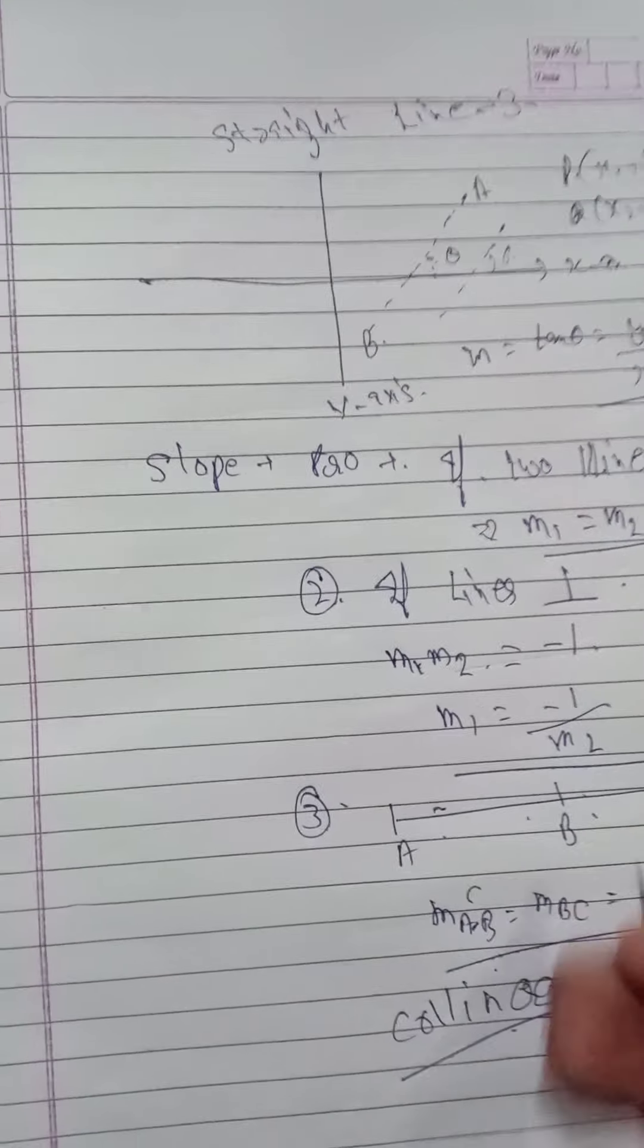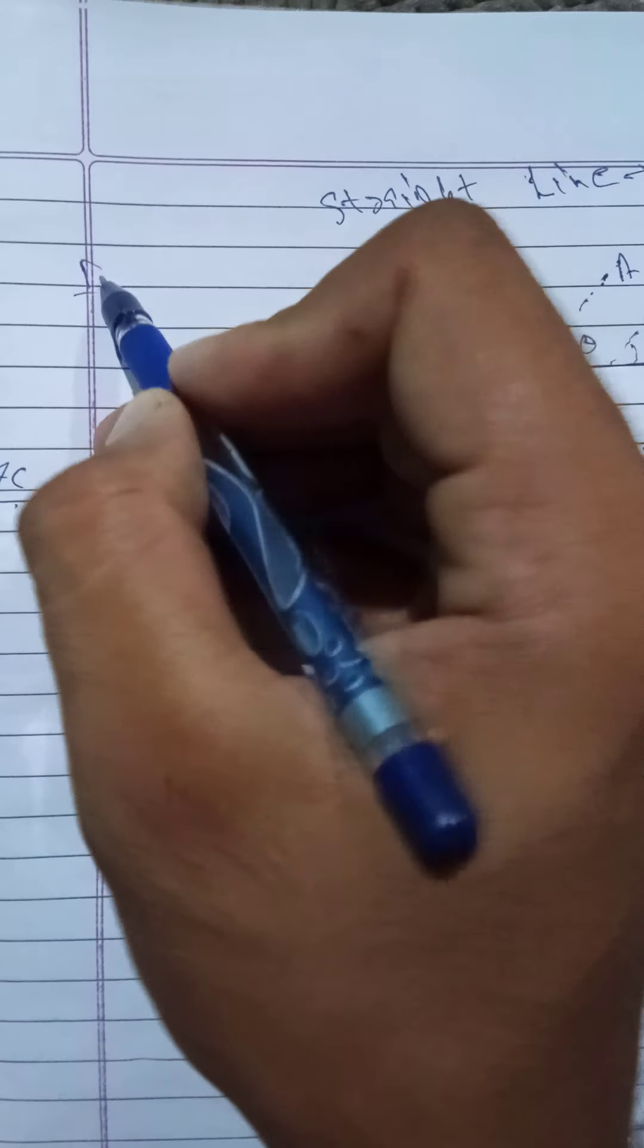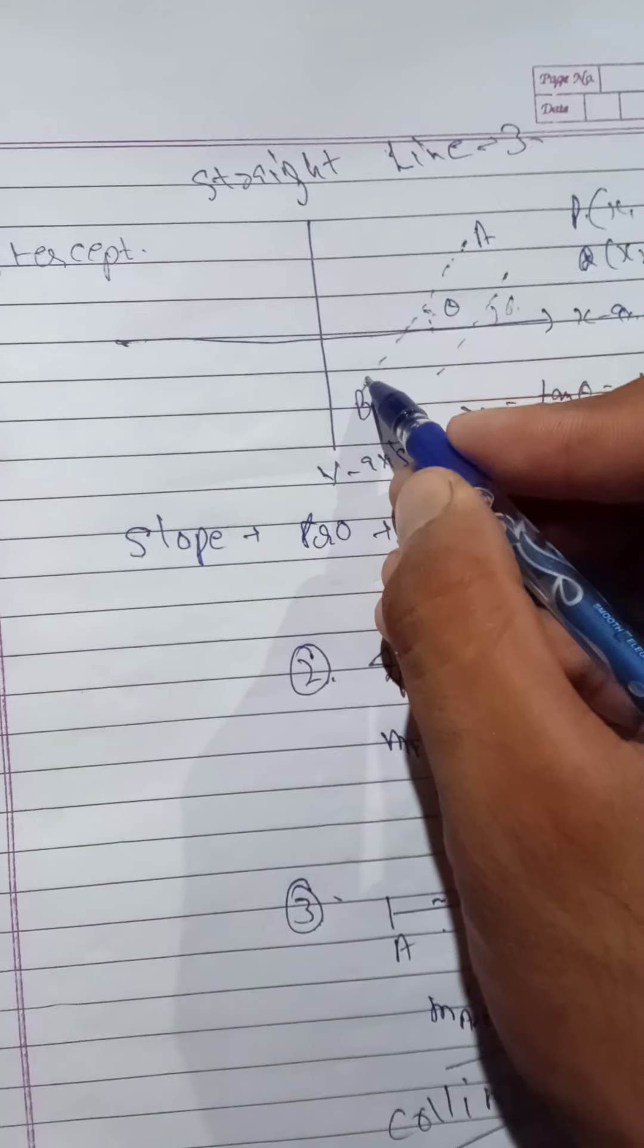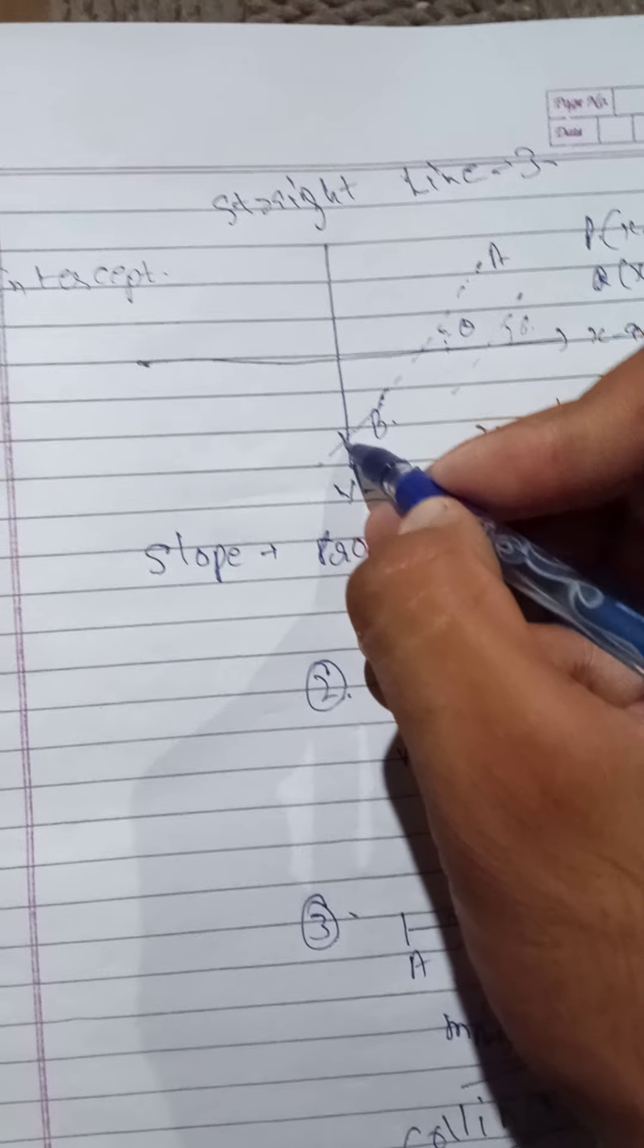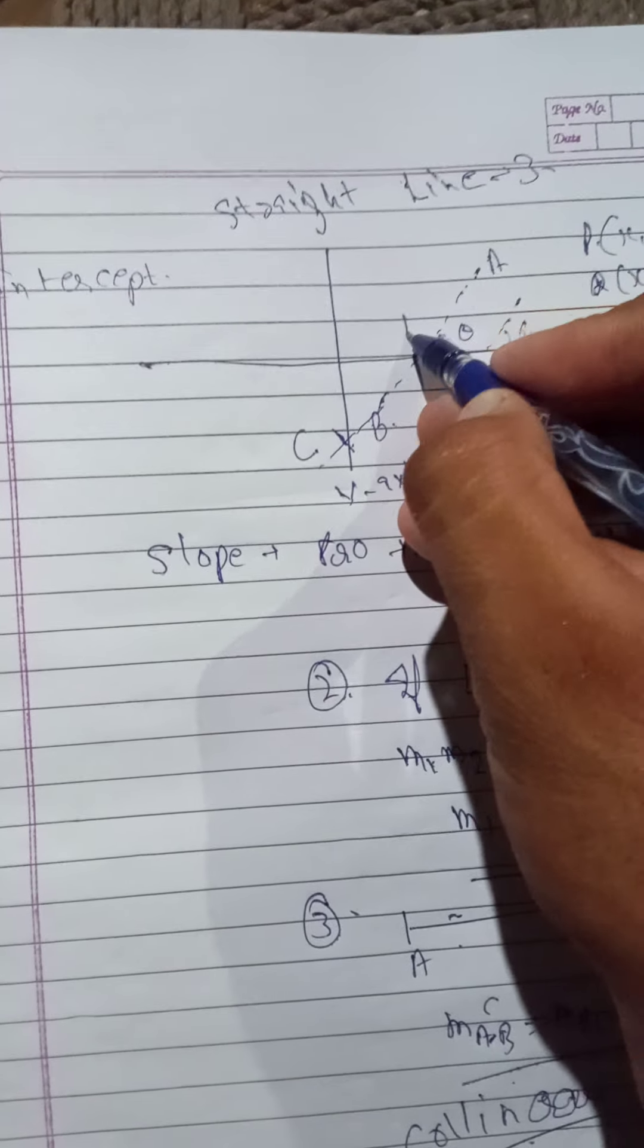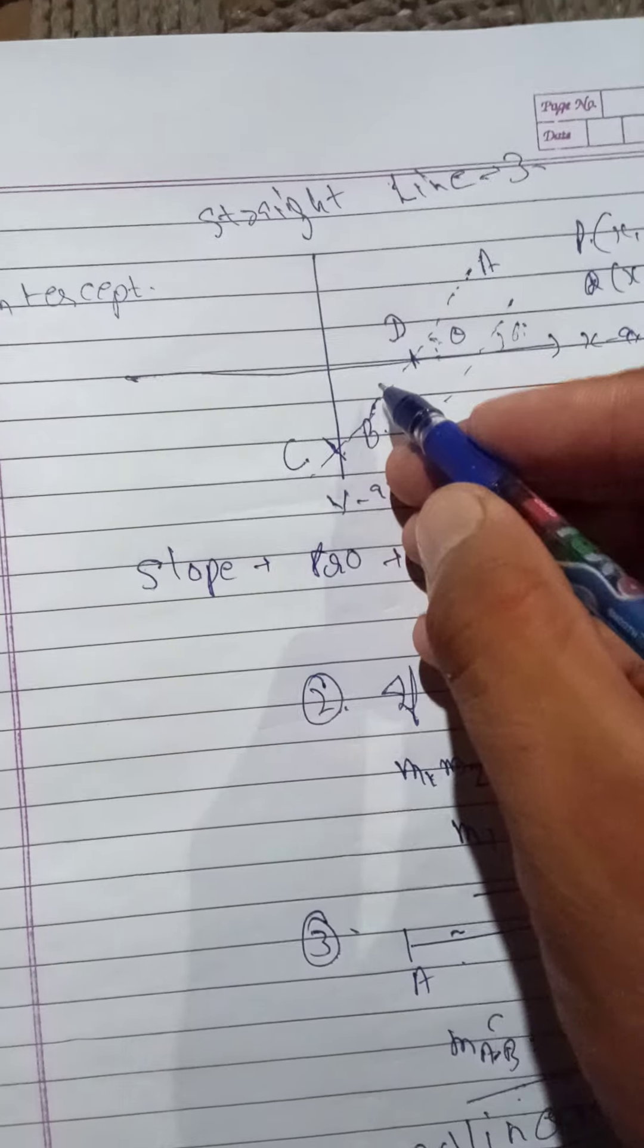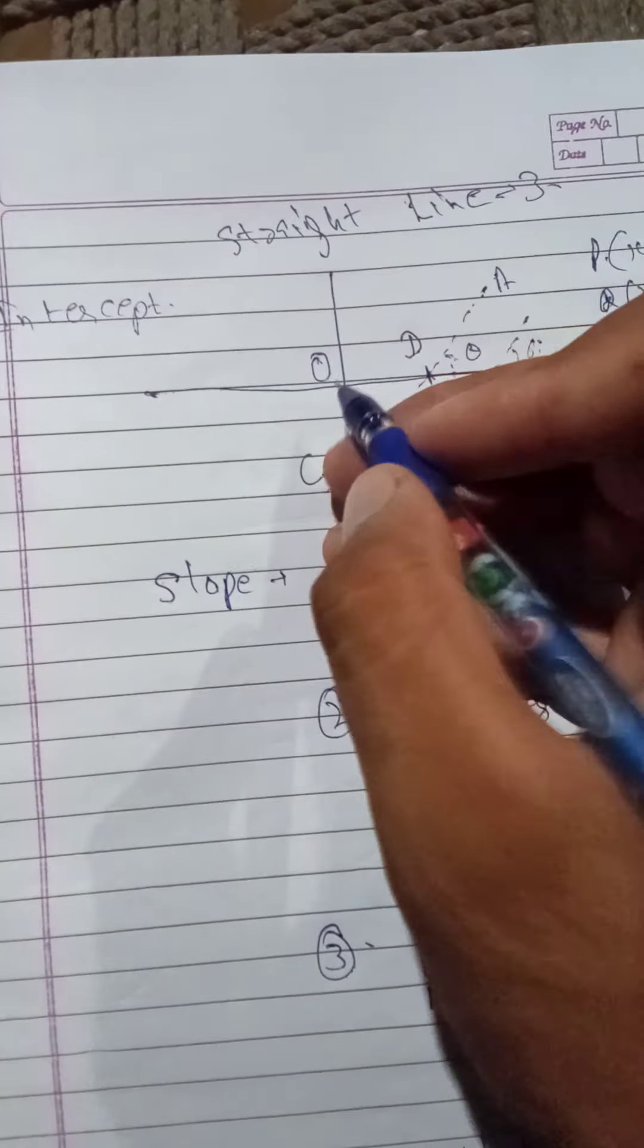Now a new thing is introduced, that is intercept. Let us consider the same line AB here, and it meets this point C and D. It cuts the x-axis at D and y-axis at C, and this is the origin O. OD is the x-intercept and OC is the y-intercept.